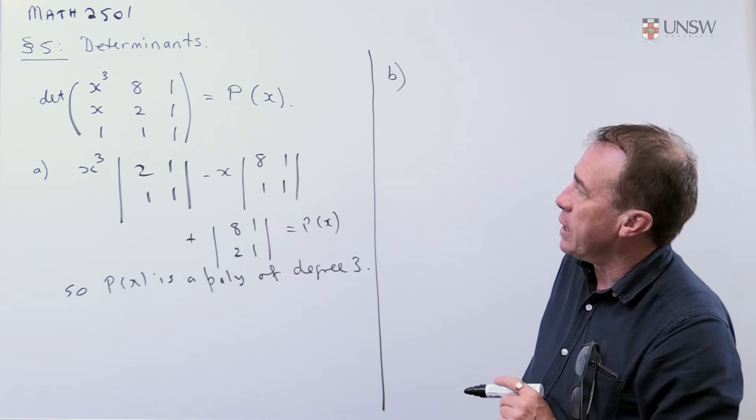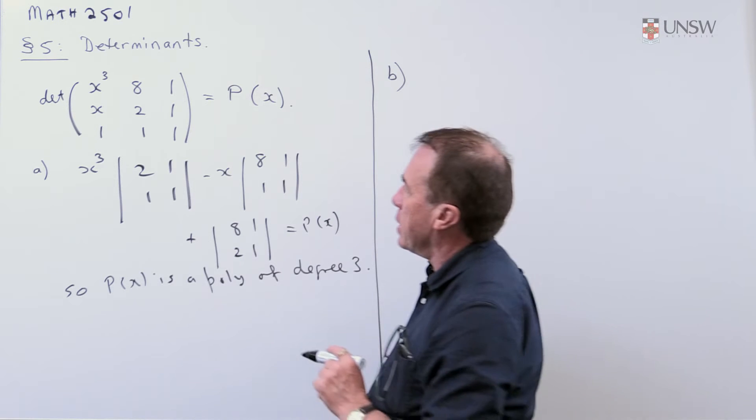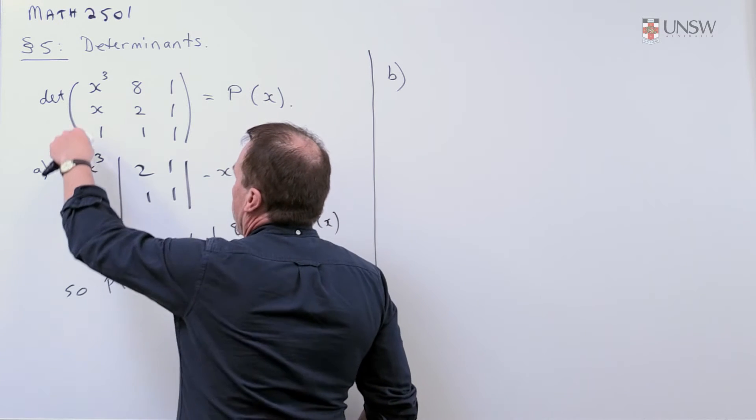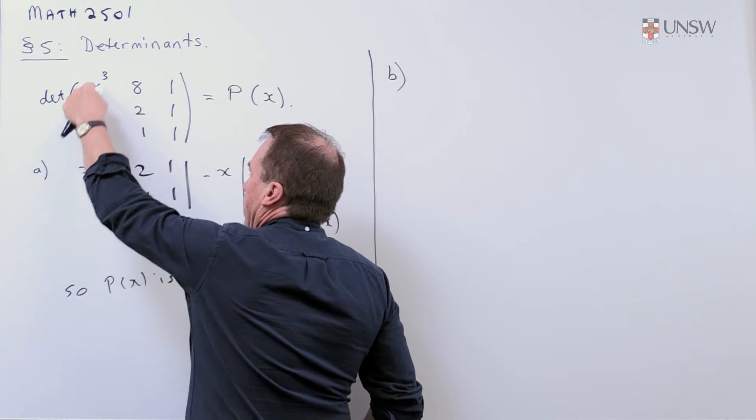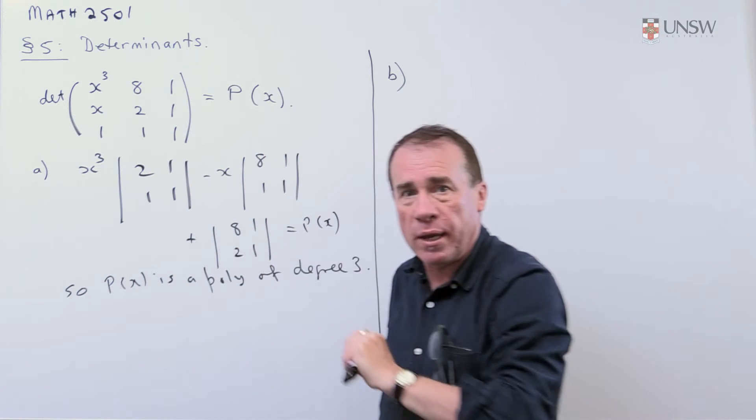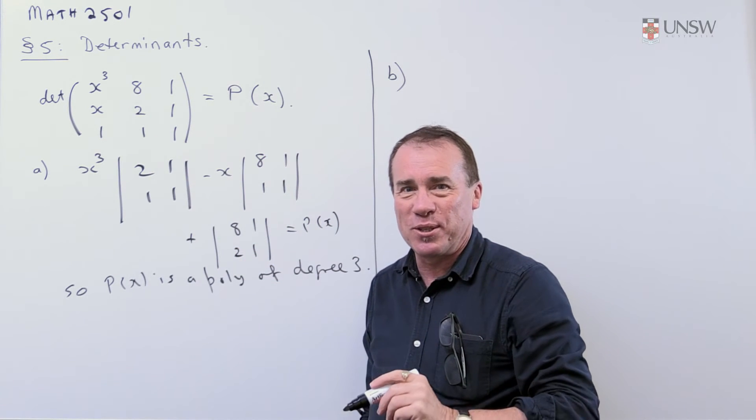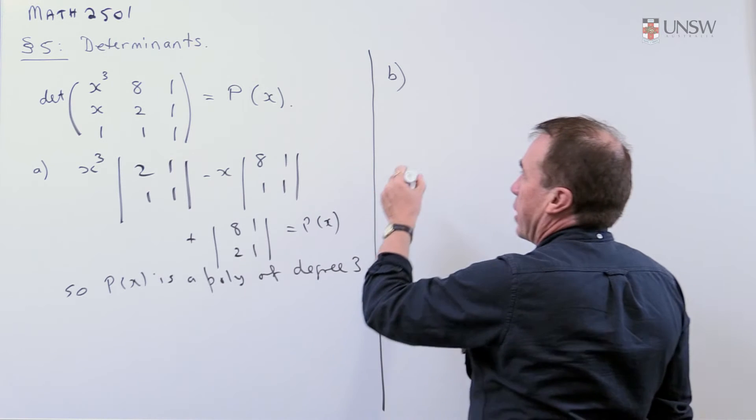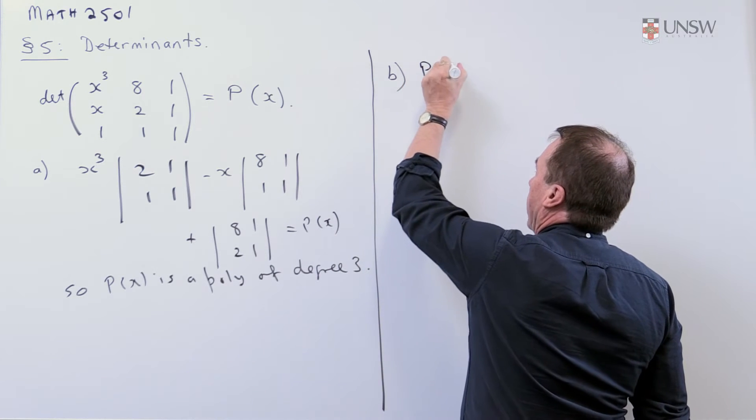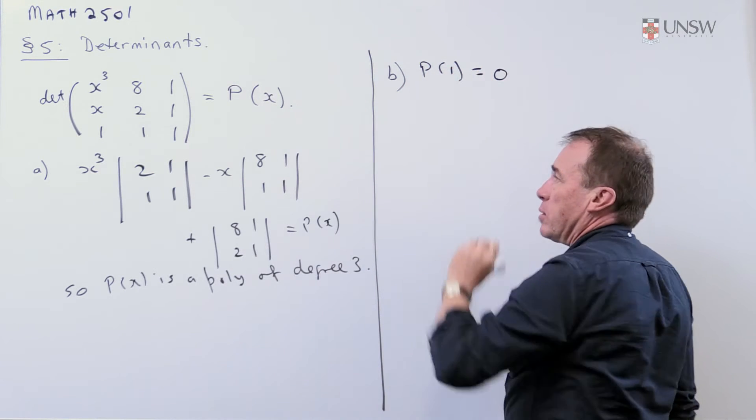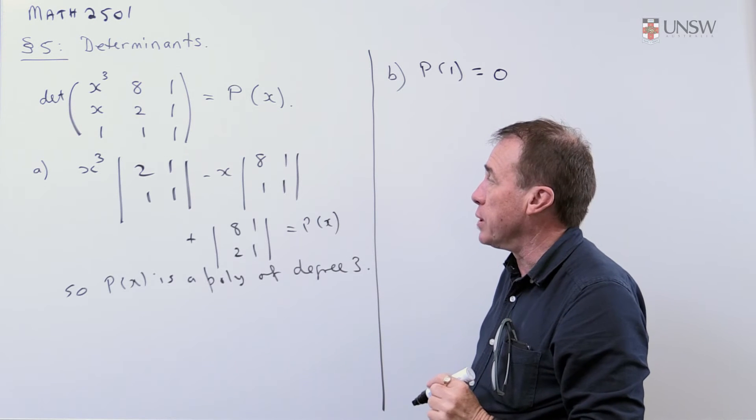So I look at the numbers in there, and I can see that if I put x to be 1, then I'll get two columns the same, and that immediately wipes out the determinant. So I'm just going to say that P(1) is going to be 0, because the determinant will be 0.